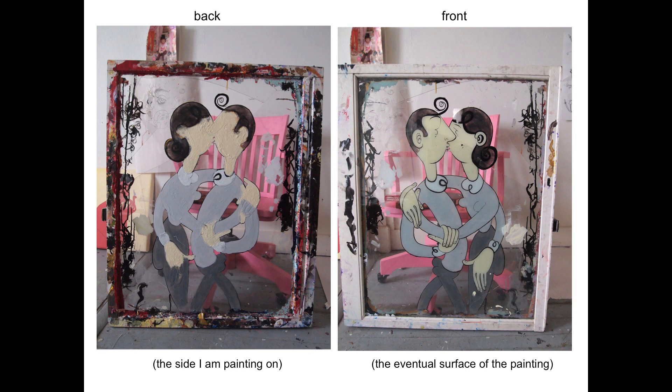Then to that skin, I attach canvas and peel the whole thing off of the glass. The method basically reverses the traditional structure of painting, foregrounding the underdrawing as the topmost layer.